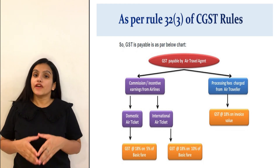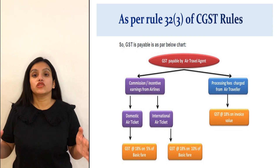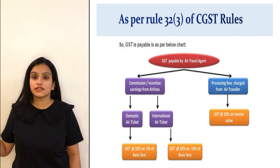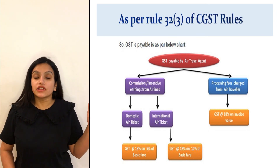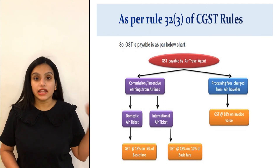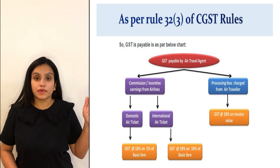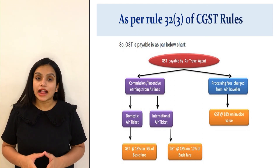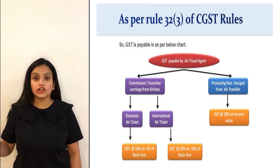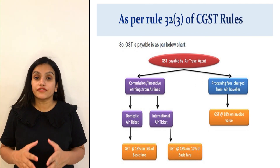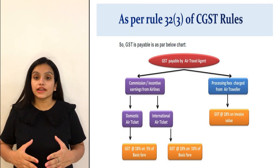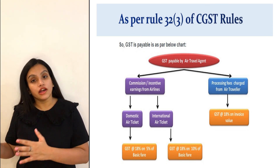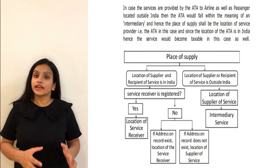GST calculation is based on two things: place of supply and value of supply. As per Section 32(3) of the CGST Rules, there are two bases to calculate GST: first, on the incentive or commission from the airline; and second, on the fee or service charge received from the client. On incentive or commission received from the supplier, in domestic airline ticketing GST is charged on 5% of the basic amount at a rate of 18%, and in international air ticketing GST is calculated on 10% of the basic amount at 18%. All service charges or fees received from an agent in both types of ticketing are taxed at 18%.